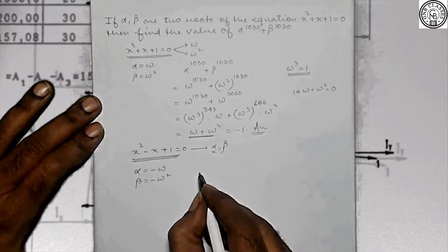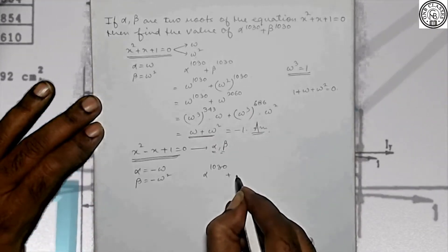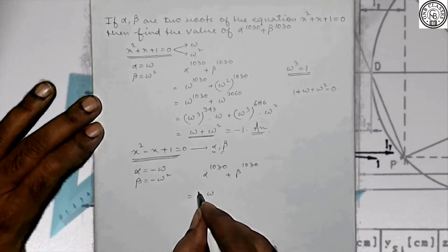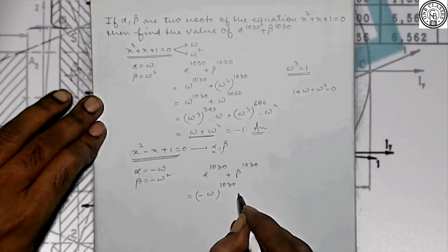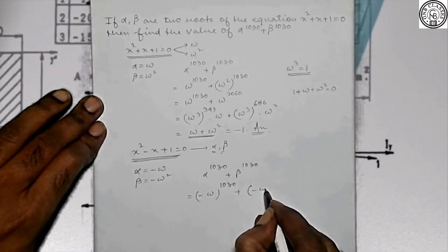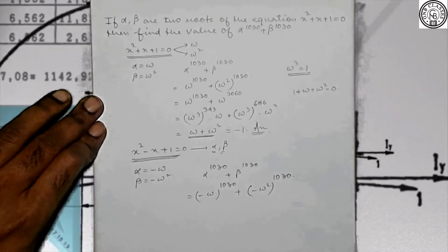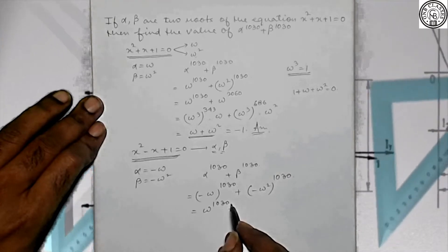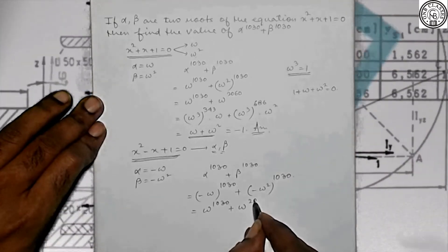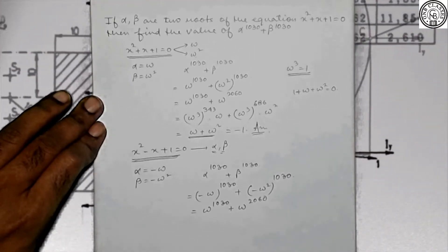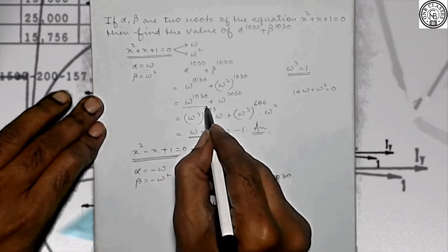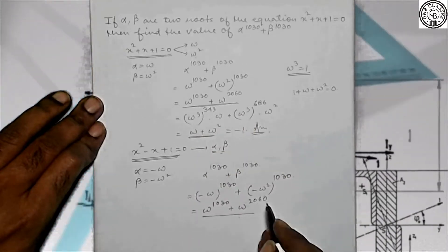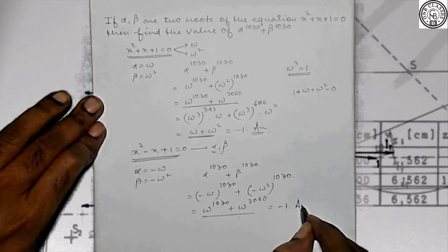Now we need the value of alpha^1030 + beta^1030 for the second equation. Same approach: in place of alpha put -omega, in place of beta put -omega square. So it becomes (-omega)^1030 + (-omega²)^1030. The minus signs vanish since the powers are even, giving omega^1030 + omega^2060. Again the answer is -1. Both expressions give the same answer.